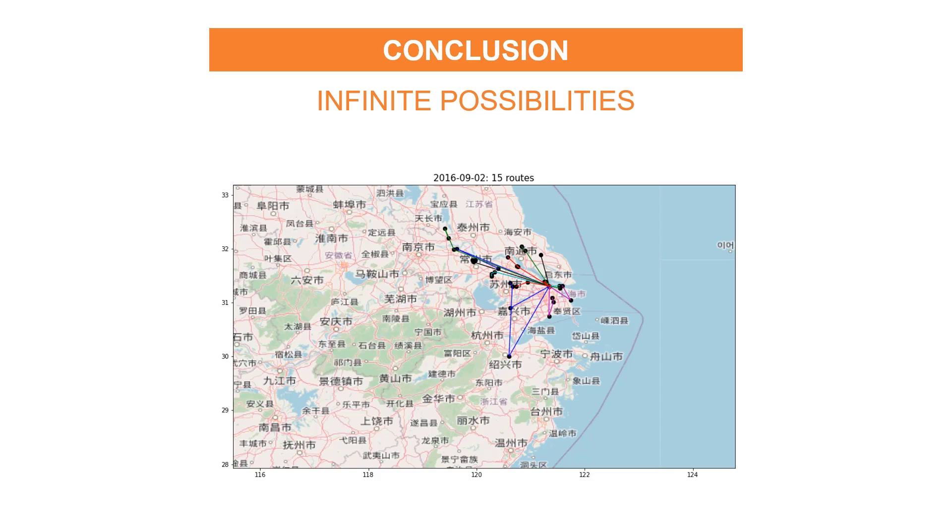So to conclude, you have now infinite possibilities for animating your graphs. For instance, in this example, I have used Pillow to animate a map showing the different transportation routes for a period of one year.